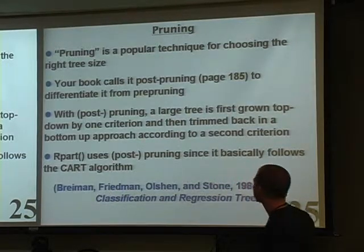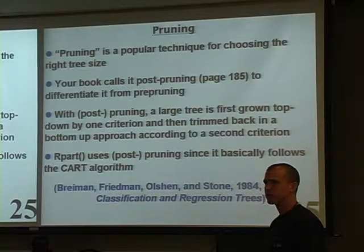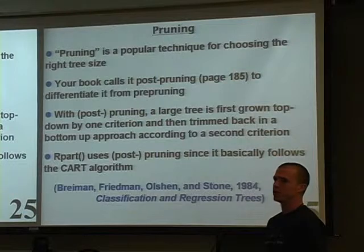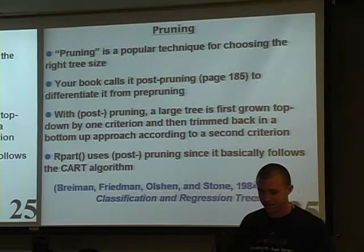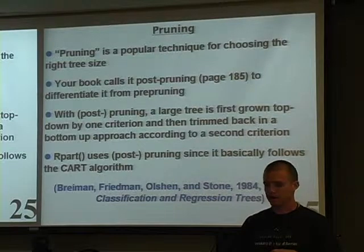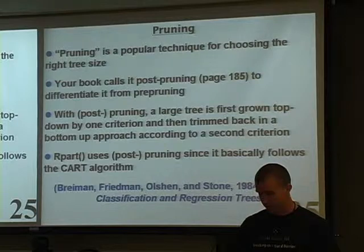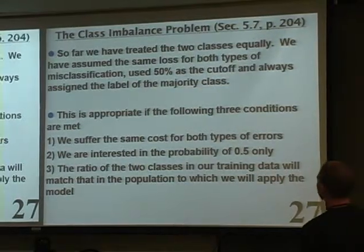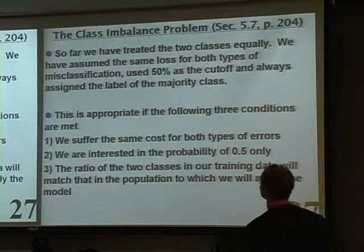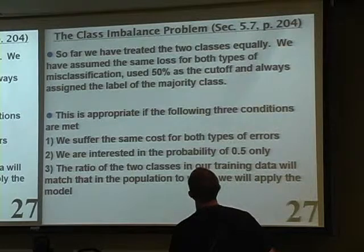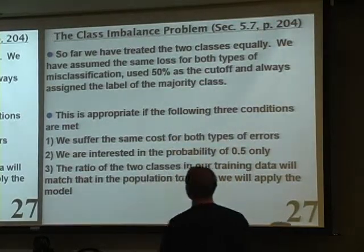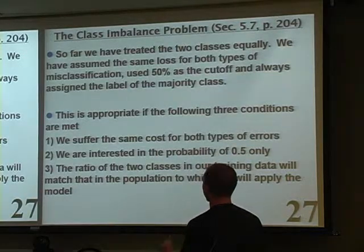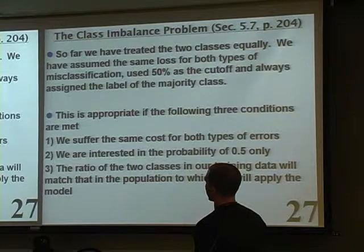Pre-pruning is stopping early; post-pruning is growing then trimming back — the book makes that distinction on page 185. Moving on: the class imbalance problem. So far we've assumed equal cost for both types of errors and used 50% as the cutoff, picking the majority class in the terminal node. This is reasonable only if costs are equal, you only care about the 0.5 threshold, and your training data class ratio matches the population.